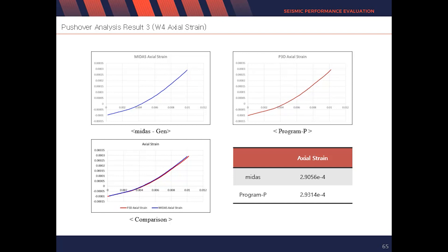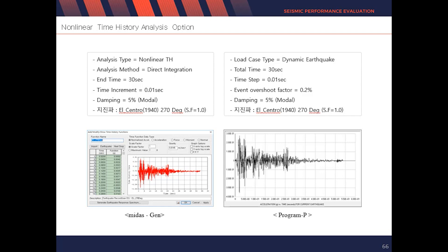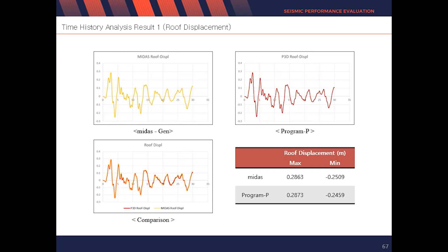This is the moment curvature graph of W4 — there is not much gap between the two programs. The axial strain value in W4 is also similar. The second analysis is nonlinear time history analysis, using the direct integration method with 5% damping as the modal method, and the EL Centro seismic wave as input. The comparison result of displacement on the roof shows that the results are also similar.